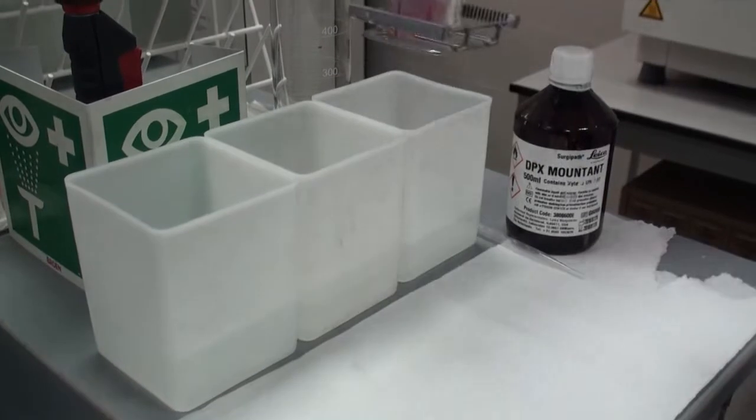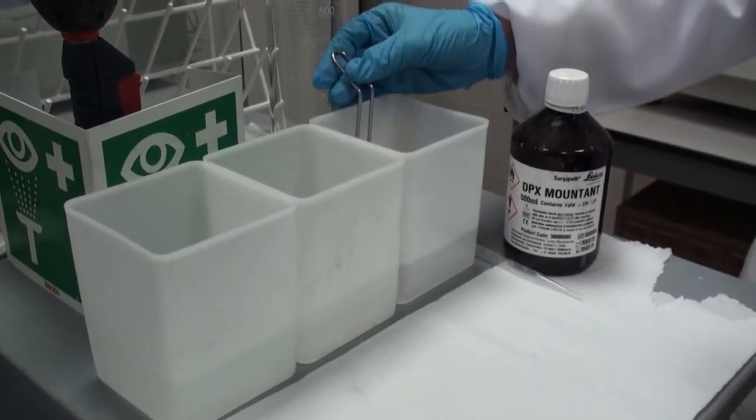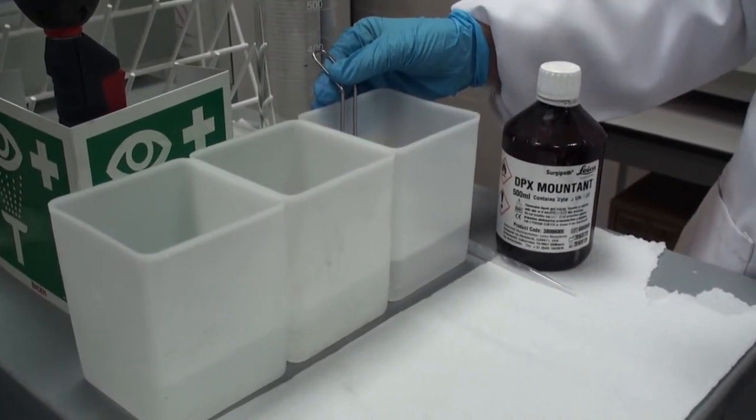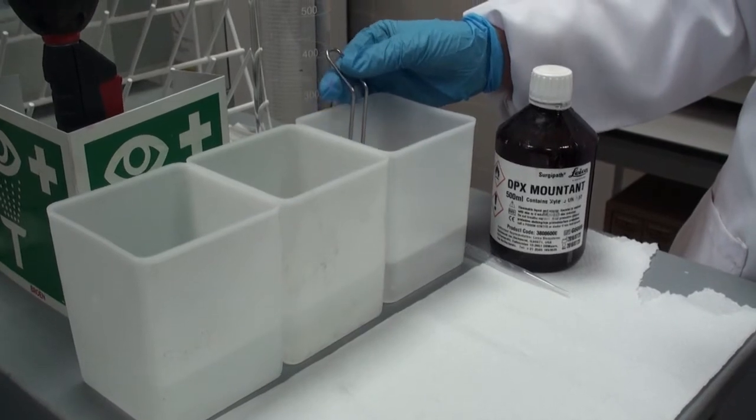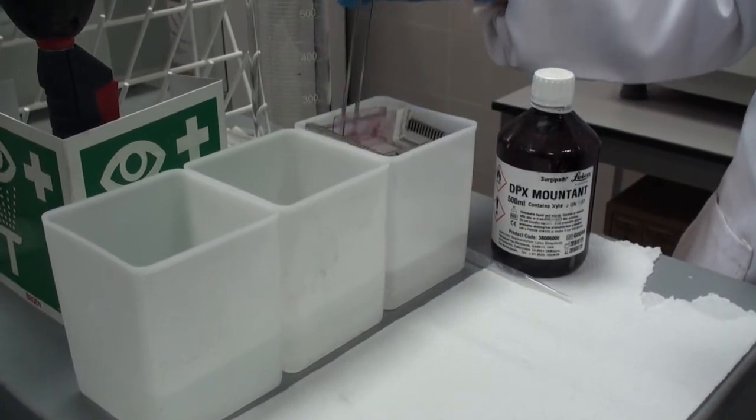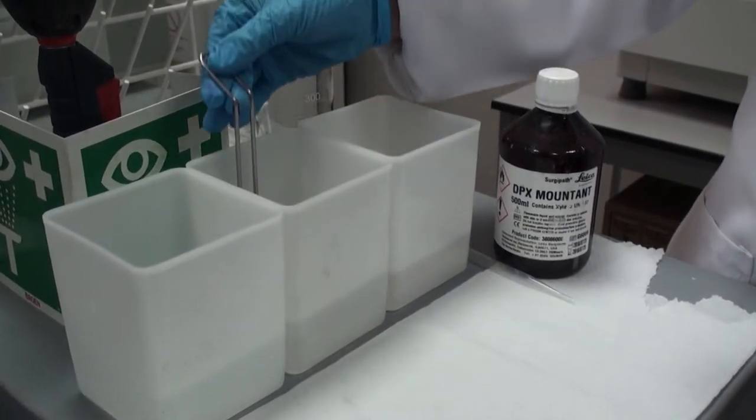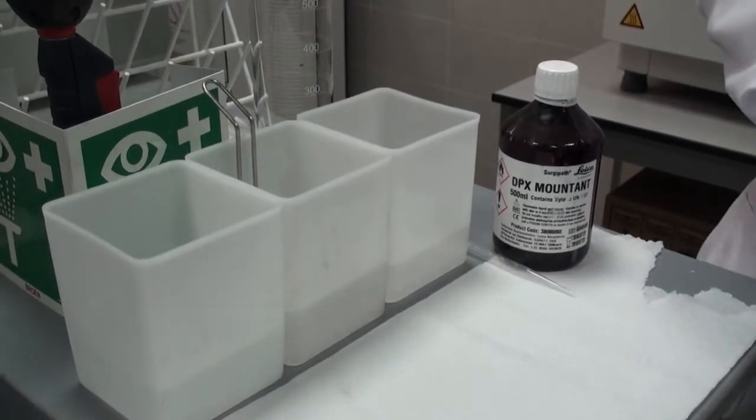Now we will dehydrate our samples again in serial ethanol, starting with the 70% ethanol. Next, more ethanol, less water. And the final step would be the xylene.